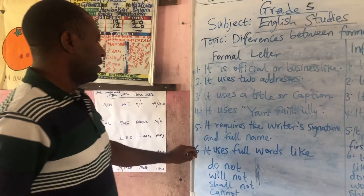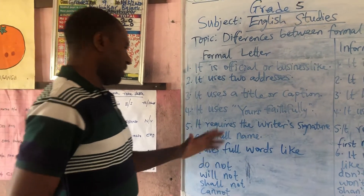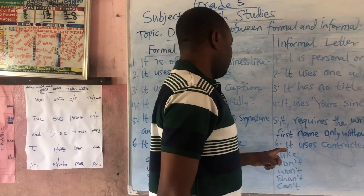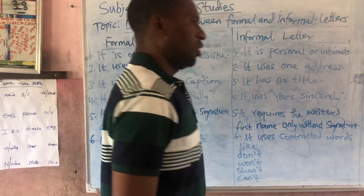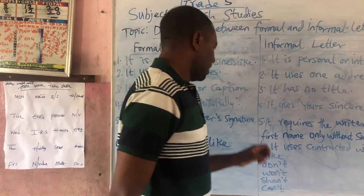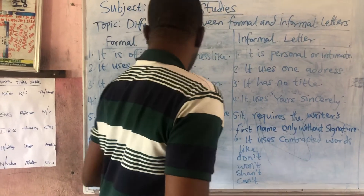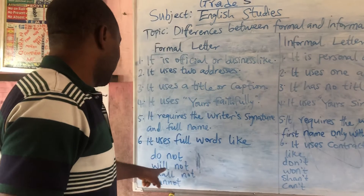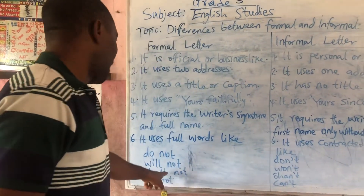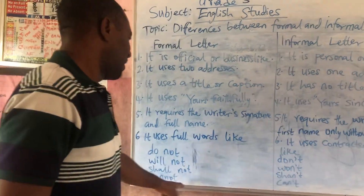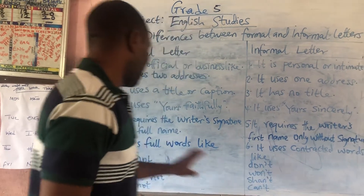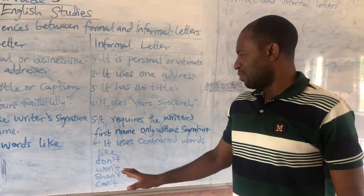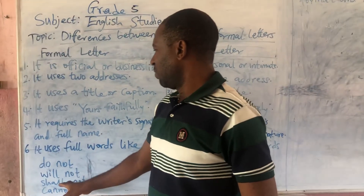Number six: a formal letter uses full words — for example, 'do not', 'will not', 'shall not', 'cannot'. An informal letter uses contracted words, which are shortened words. So in an informal letter: 'do not' becomes 'don't', 'will not' becomes 'won't', 'shall not' becomes 'shan't', 'cannot' becomes 'can't'. If you are writing an informal letter, use contracted words; if writing a formal letter, use full words.